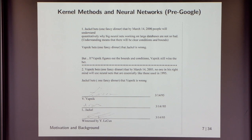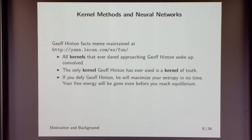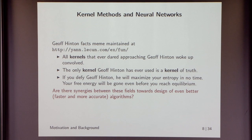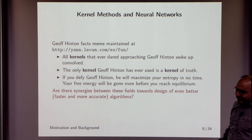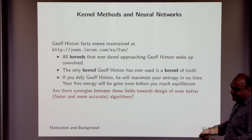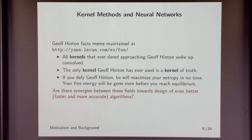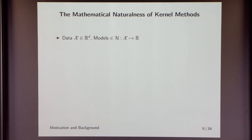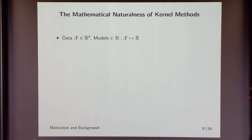Vapnik probably got this wrong, because the fact of the matter is neural nets are used heavily in industry — there is enormous traction around these ideas now. The point here is not to make it seem like a competition; it's to find synergies between these two different algorithmic ideas. At IBM, if you do anything other than deep learning you have to justify it.